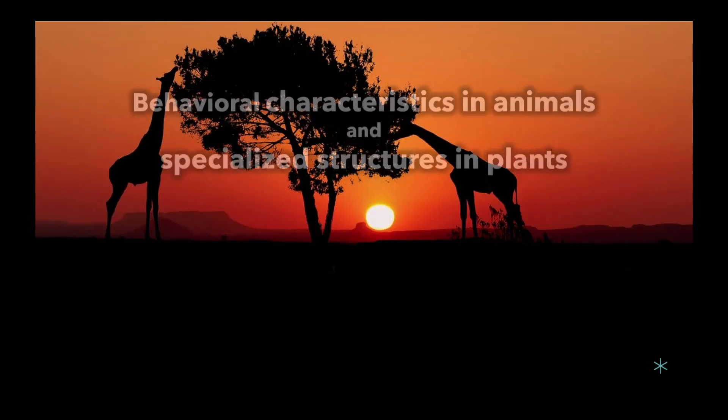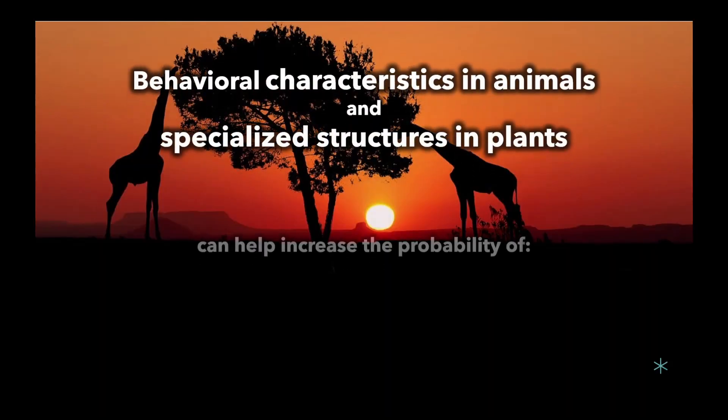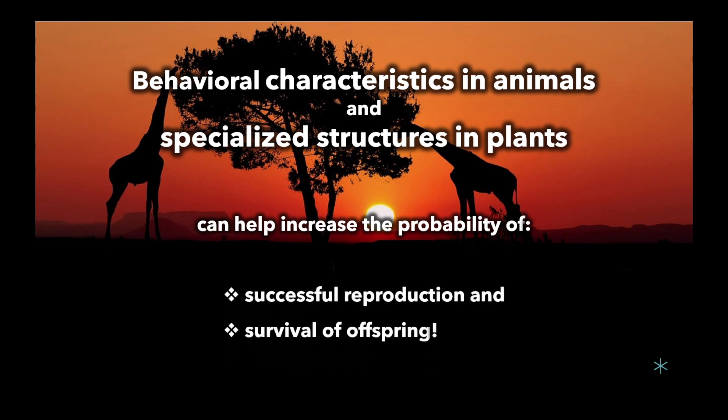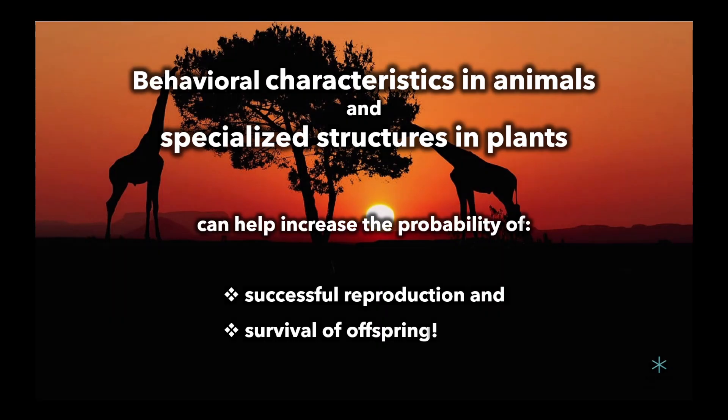As you can see, certain behavioral characteristics in animals and specialized structures in plants can help increase the probability of successful reproduction and survival of offspring.